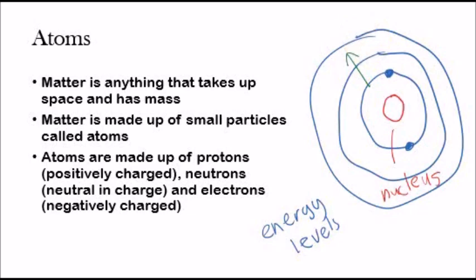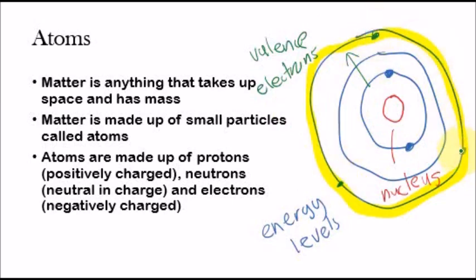And the outermost energy level, in this case right here, that would be what I'm highlighting. The outermost energy level is going to consist of what we call the valence electrons. And the valence electrons play a very important role in bonding. And that's going to be the next video. But just know that the electrons that would be found, let me just draw in some electrons here. The electrons that are found in the outermost energy level are the valence electrons.